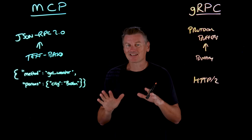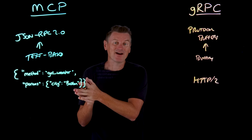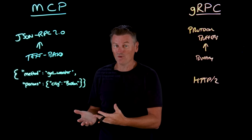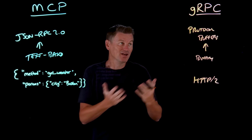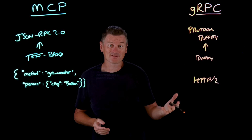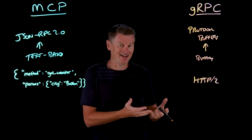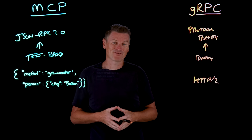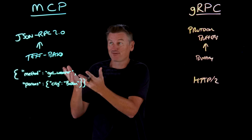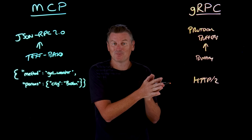Ultimately, it comes down to this: MCP was born in the age of AI — it's built to help LLMs and agents understand what tools do and when to use them. gRPC brings proven speed and scale from the microservices world, but needs translation layers to speak AI. As agents mature from chatbots to production systems, expect to see both: MCP as the front door for AI discovery, and gRPC as the engine for high-throughput workloads.